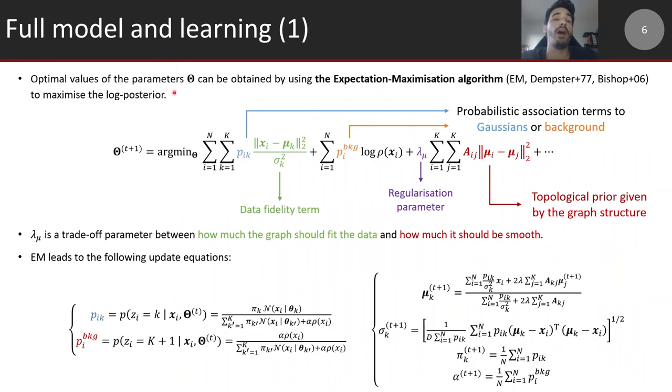To find the optimal values of the parameters theta, we use the expectation maximization procedure to maximize the log posterior, which is the sum of the log likelihood and the log prior. It leads you to minimize a cost function with different terms. The first is the data fidelity term: how much you want your representation, the graph in our case, to be close to the observed data with some fuzziness introduced by the variances and a weight that is the probabilistic association of a data point to a given Gaussian or to the background component. The other term is how much you want your graph to be smooth and short, the topological prior. The trade-off is controlled by the regularization parameter lambda_mu.